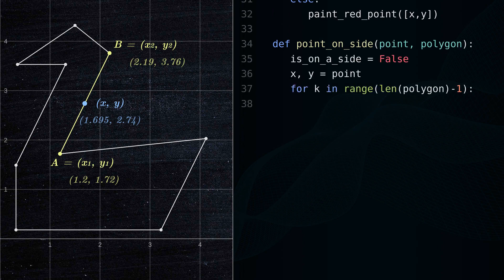For each vertex of the polygon, consider the line segment AB. The point will lie on the line segment if the following three conditions are true.